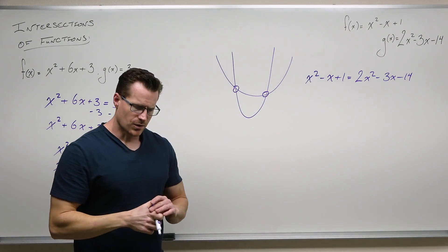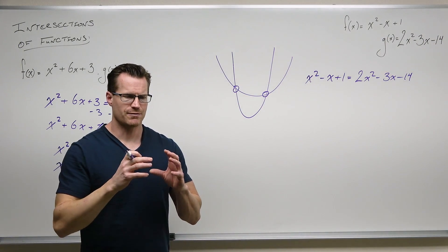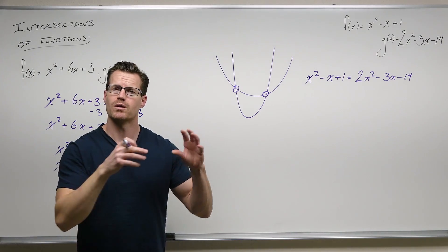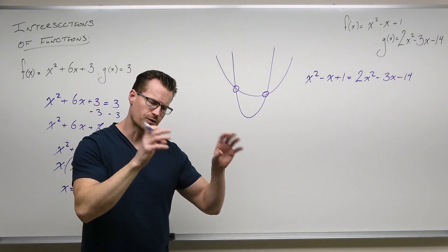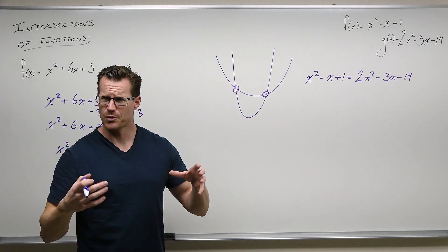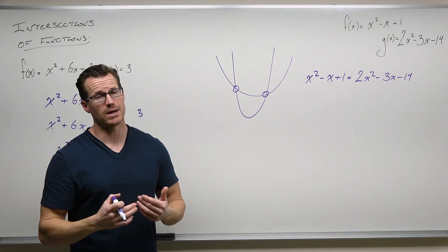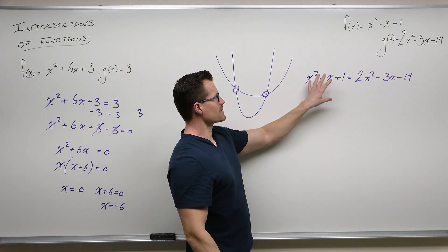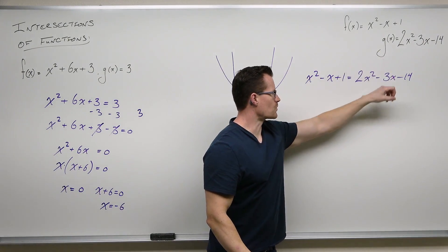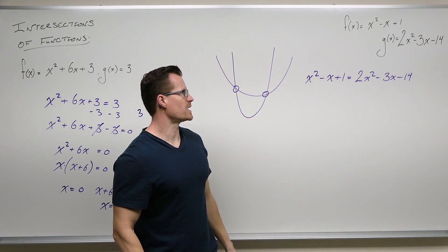We're going to go through the same process for solving everything that has a power two or more: get everything on one side, in order, first term positive, and see if we can use the square root method, factor, or quadratic formula. Let's get this stuff from the left moved over to the right by adding or subtracting respectively.